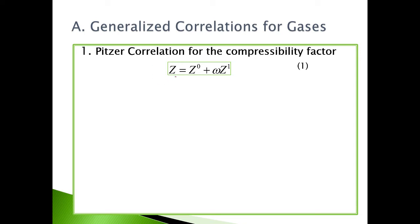So this is our compressibility factor, expressed in terms of Z naught plus omega Z1. This omega is called the acentric factor, a measure of the non-sphericity of the molecules. It was also formulated by Pitzer.